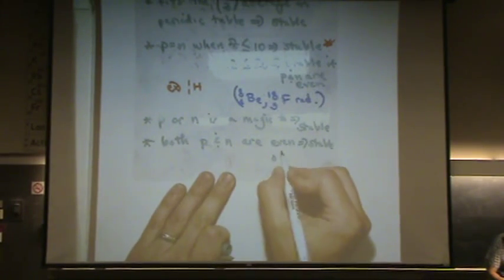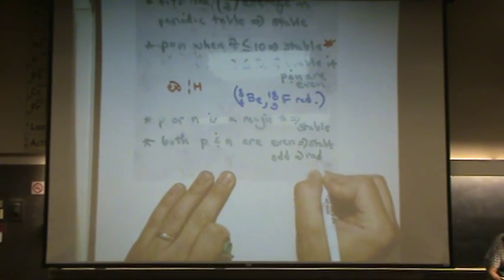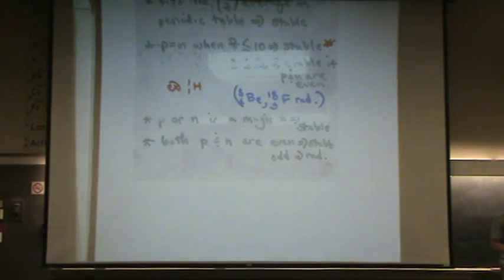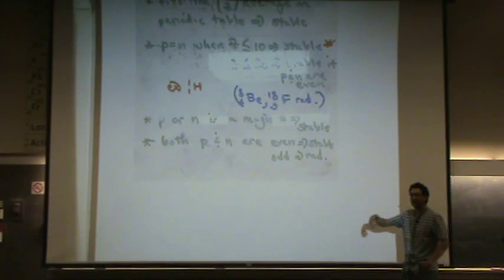If they're odd, it's radioactive or unstable. If one's odd, one's even, it's in the middle. Does that make sense?